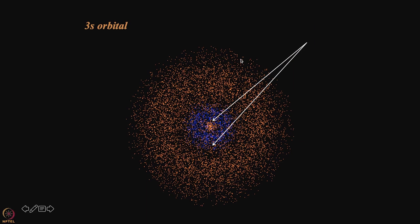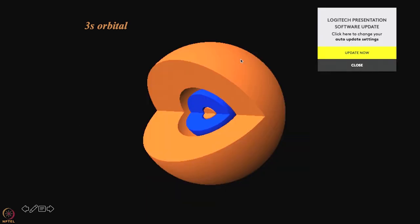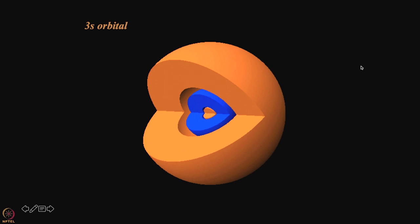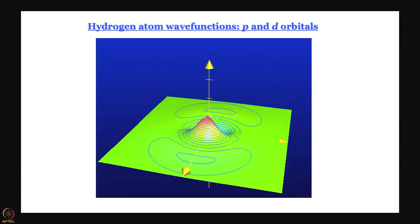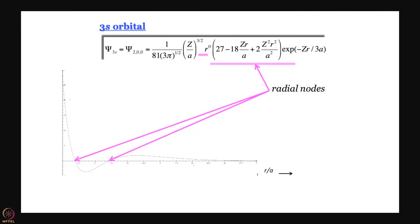Now let us go to the 3s orbital. The 3s orbital, as we know, has a polynomial of second order in its expression — three terms. A polynomial of second order equated to zero gives you two roots, and you can work out what these roots are. I think they are approximately 1.9 and 9 if you set z equal to 1 and a equal to 1, so the nodes occur at two different places.